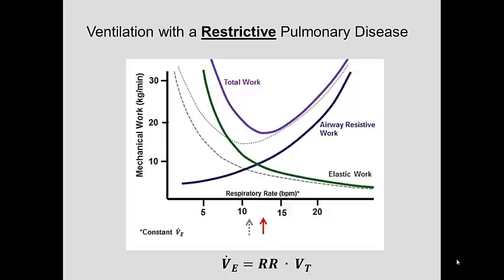This causes a rightward shift in the minimum of the total work relationship, which means that in order to minimize work, it would be advantageous with a restrictive pulmonary disease to increase the respiratory rate with a corresponding decrease in the tidal volume. And in fact, this is usually what happens — patients with a restrictive pulmonary disease tend to ventilate shallower and more rapidly than normal.